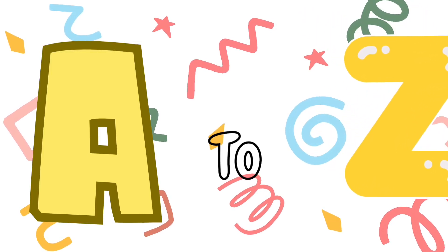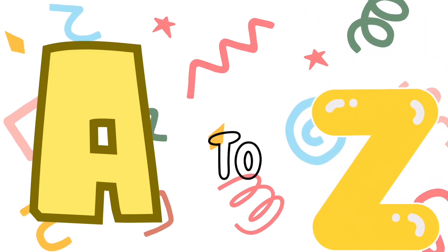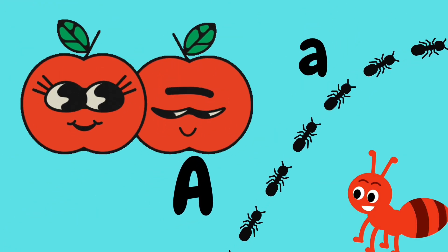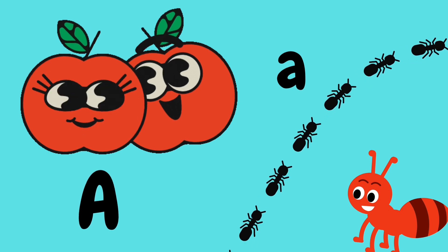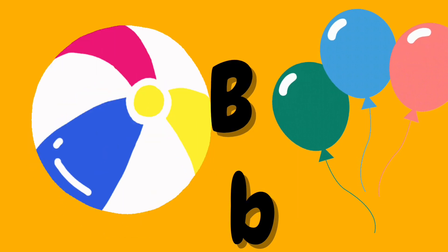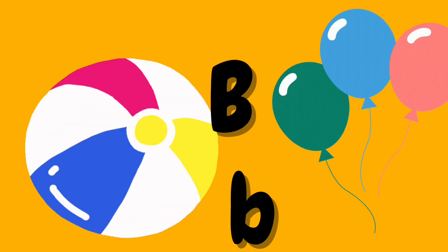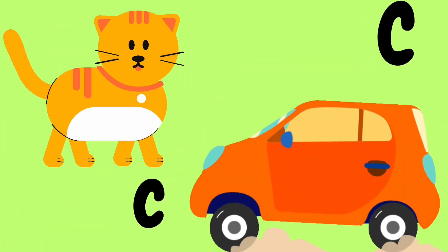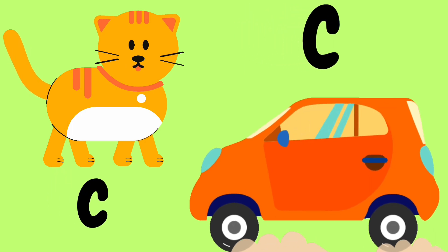A to Z Phonics, Learn with Eva. A is for Apple — A-A-Apple, A-A-Apple, A-Apple. B is for Boy — B-B-Boys, B-B-Boys, B-Boys.